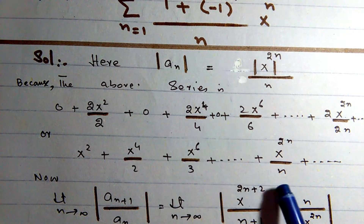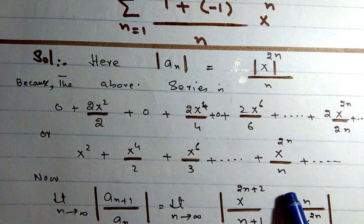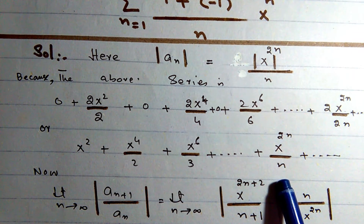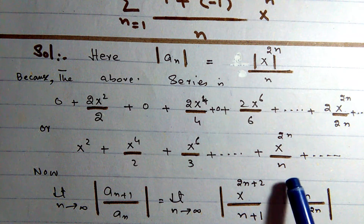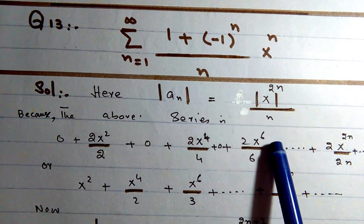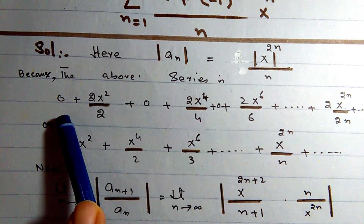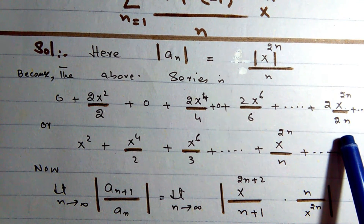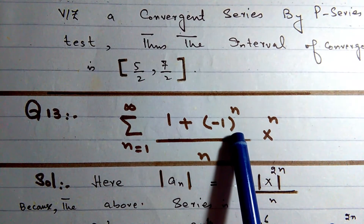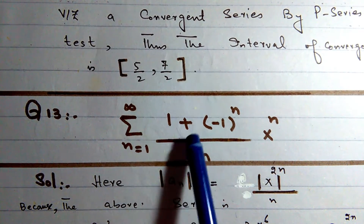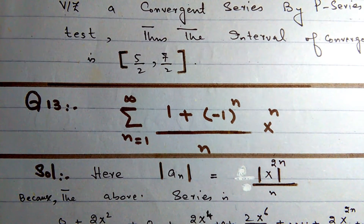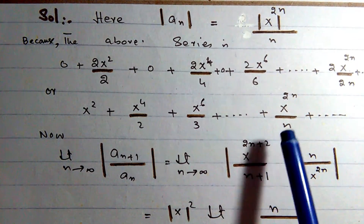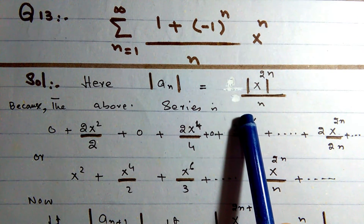The nth term is |x|^(2n)/n. So the series is: x², x⁴/2, x⁶/3, ..., x^(2n)/n. We now apply the ratio test for absolute convergence.